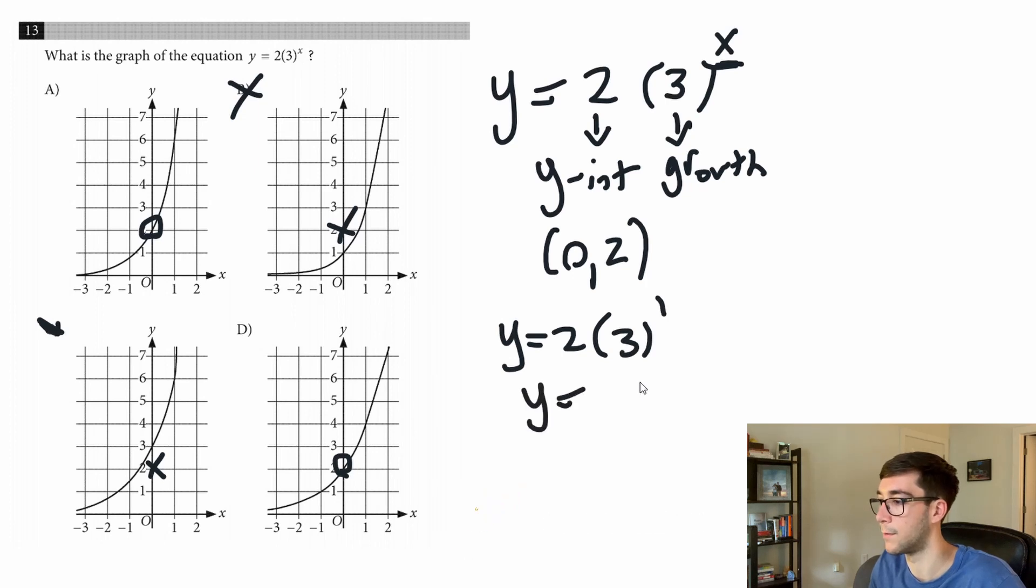Y equals 3 to the one is three, three times two is six. So we get the point (1,6). This graph here does not have (1,6), can't be D. This graph here has (1,6), so it has to be A.